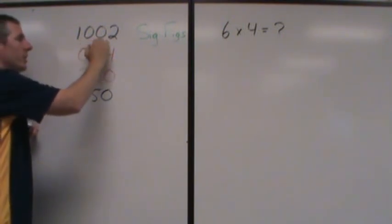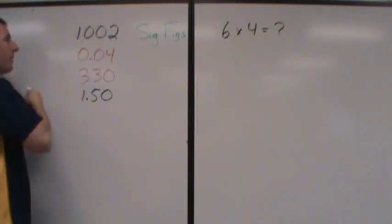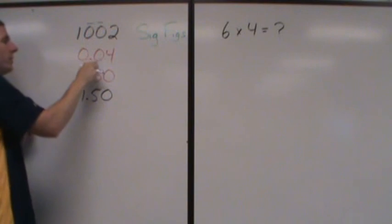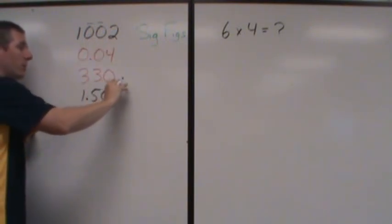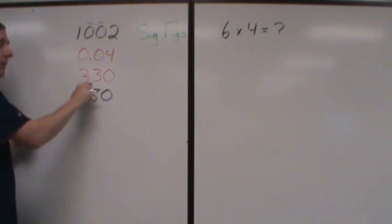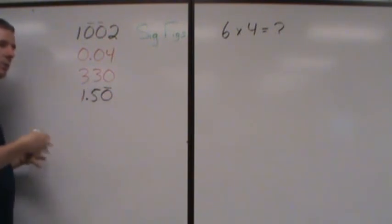They usually say things like if the zeros are in the middle of two non-zero digits, then that will always be significant. If you have zeros to the left, those are never significant. And if you have zeros to the right, it depends on whether you have a decimal place or not. If you have a decimal place, it'll be significant. If you don't, then it won't.